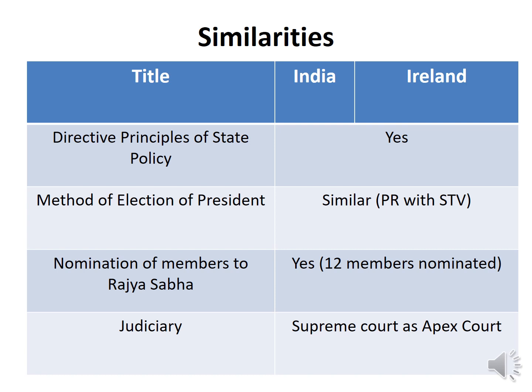India has borrowed three features from Ireland. First, both have Directive Principles of State Policy (DPSP). Second, the method of election of the President — proportional representation with single transferable vote — is similar. Third, nomination of members to the upper house: in India, 12 members are nominated by the President to the Rajya Sabha; similarly in Ireland, some members are nominated to the upper house by the President. Additionally, both countries have a Supreme Court as the apex of the judiciary.